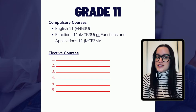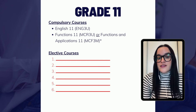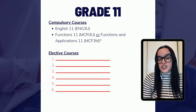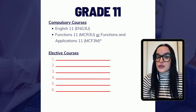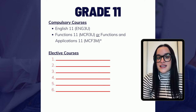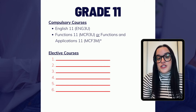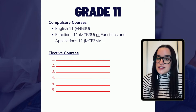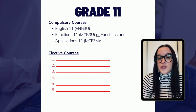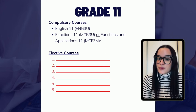Students in grade 11 are required to complete two compulsory credits: English and math. For math, they have two options — they can participate in Functions (MCR3U), which is the university level, or Functions and Applications (MCF3M), which is the mixed-level university and college. Students interested in the mixed-level course because they struggled in grade 10 will need to discuss this with guidance, as it does limit and affect post-secondary pathways and goals.